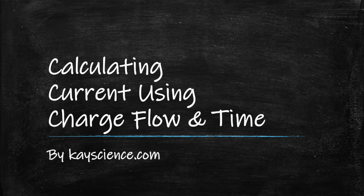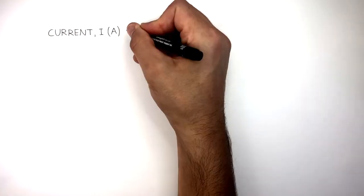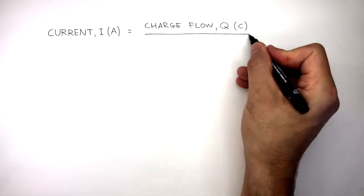Calculating Current Using Charge Flow and Time by kscience.com. The equation to calculate current is: Current equals charge flow divided by time.